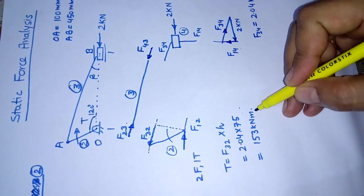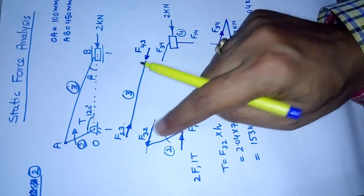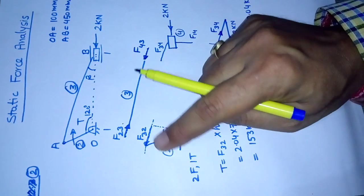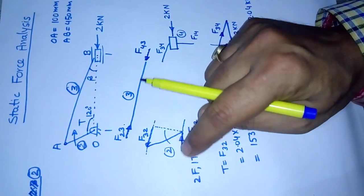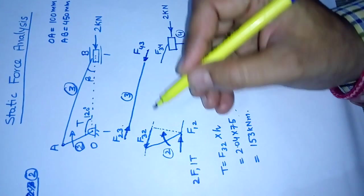How to determine the direction? If you see the direction of the couple, it is rotating in the anticlockwise direction, so torque should act in the clockwise direction to balance it. The value of torque is 153 kilonewton-millimeters clockwise.